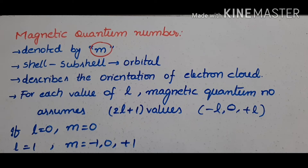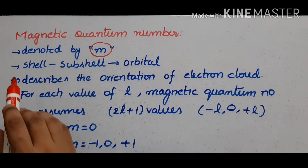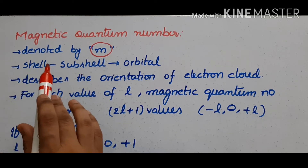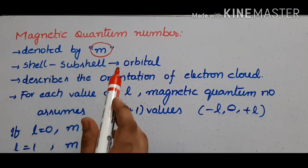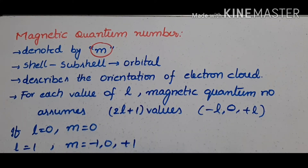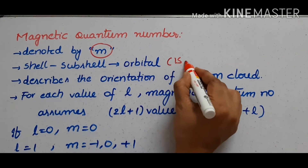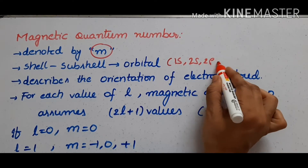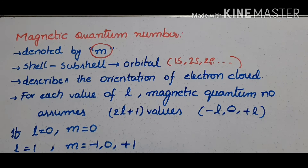Magnetic quantum number is denoted by a small m. Under the influence of a magnetic field, each subshell is divided into one or more orbitals in which electrons can be filled up. We know that shells consist of subshells — shells are KLMN, and subshells are s, p, d, f — so we have orbitals like 1s, 2s, 2p where electrons are filled. Under the magnetic field, this describes the distribution of electrons in atoms.